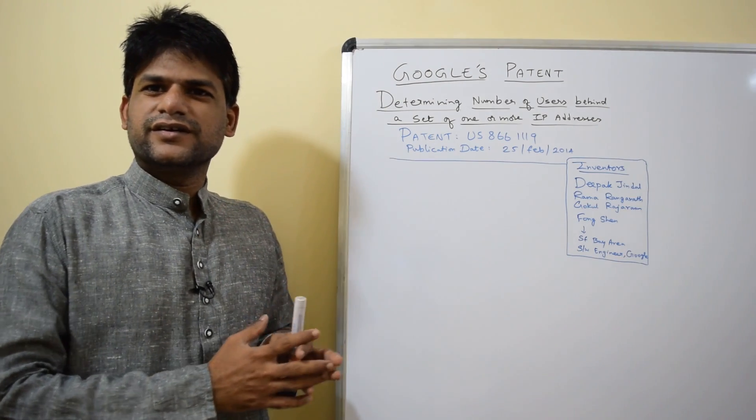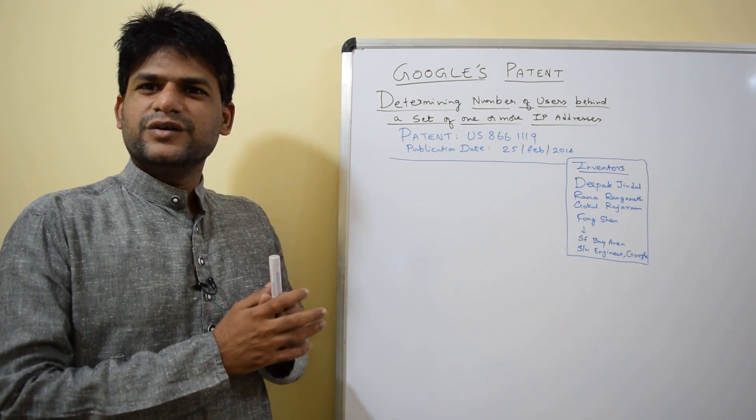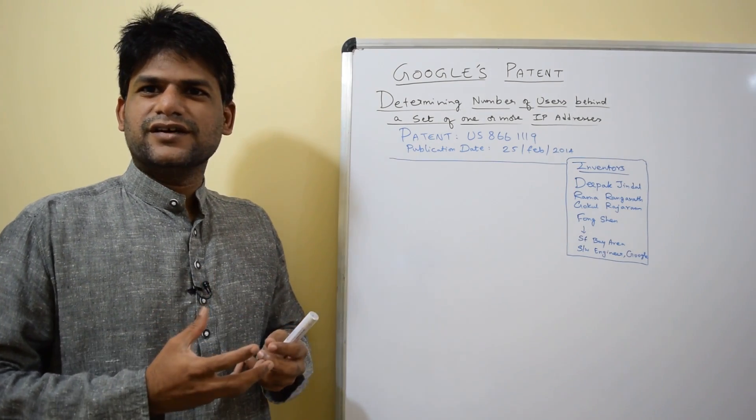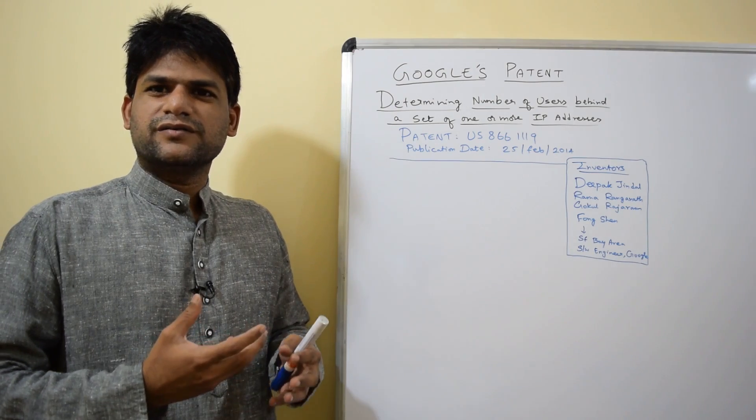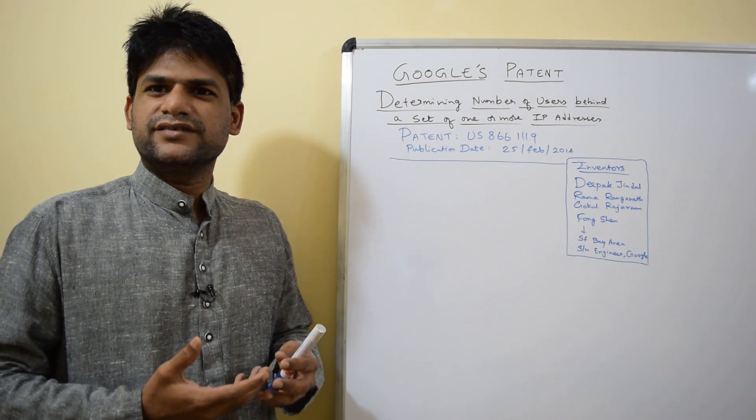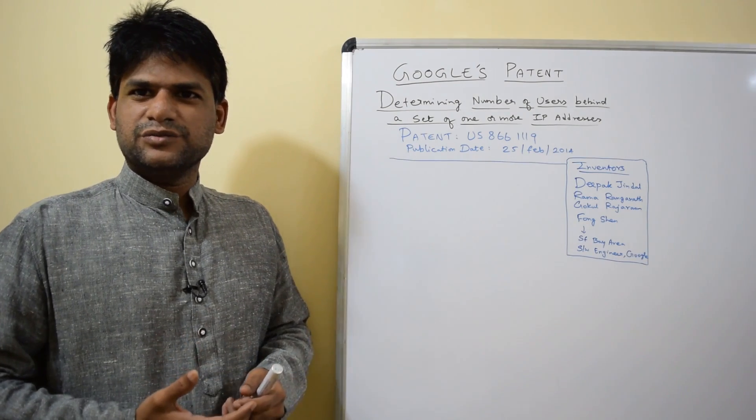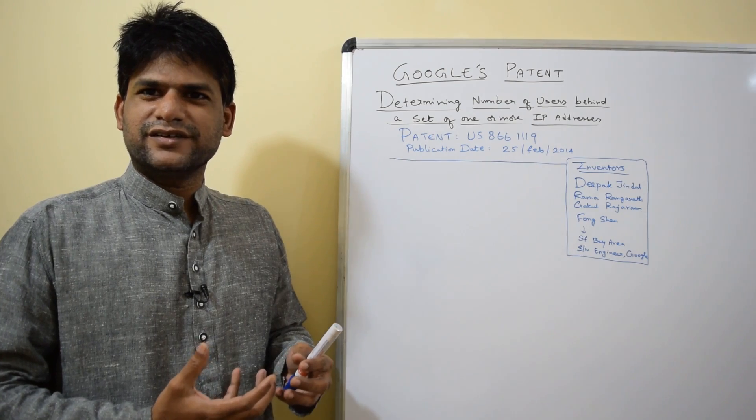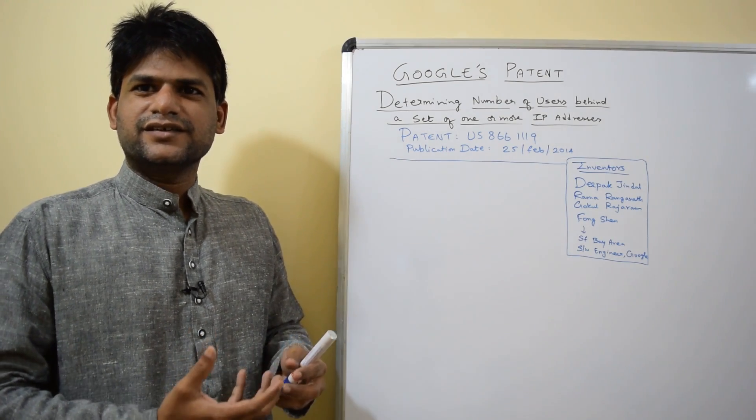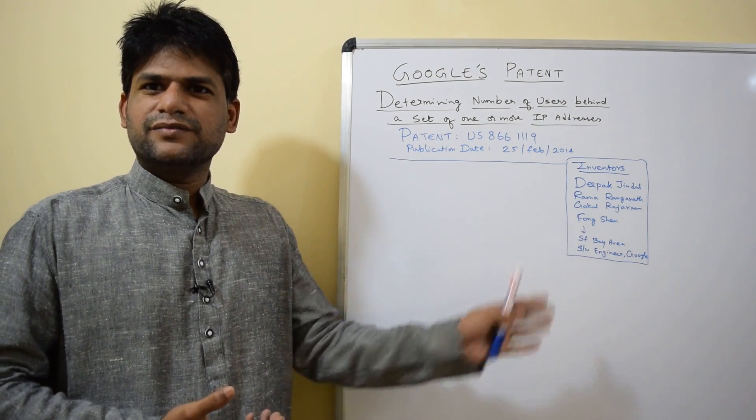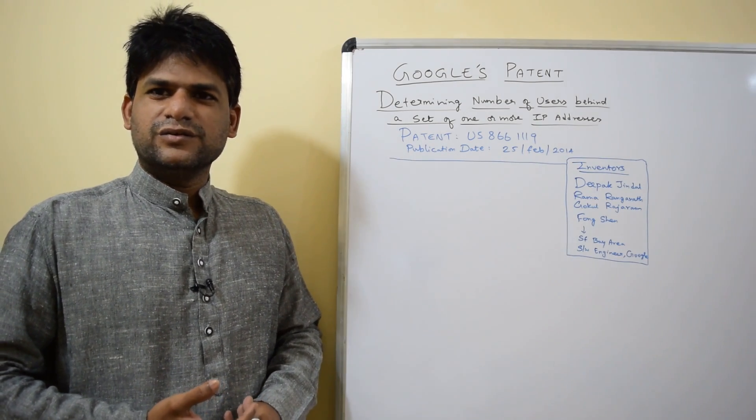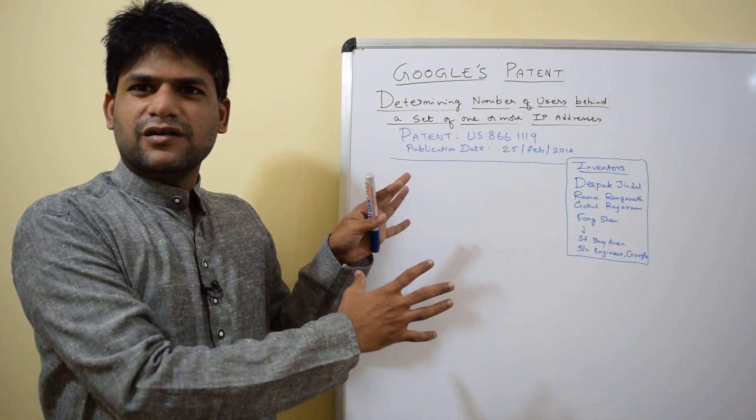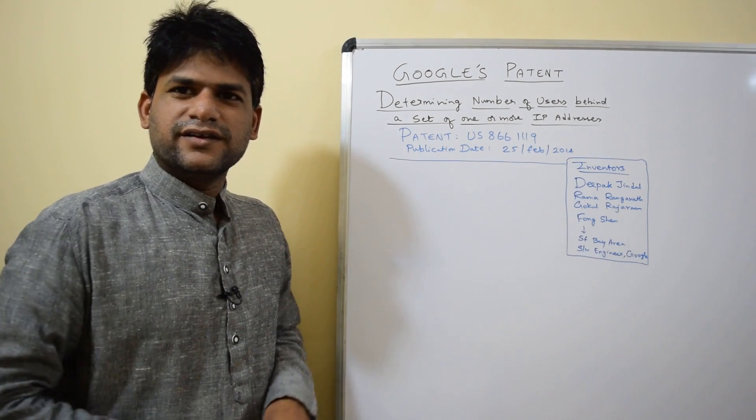The patent is all about discovering the number of users behind one or more IP addresses. This is something you can understand if you're working on SEO strategy, whether for a website or for YouTube. This is how Google's algorithms are designed. I discovered it was invented by a few Indian Google employees as well as another Asian.